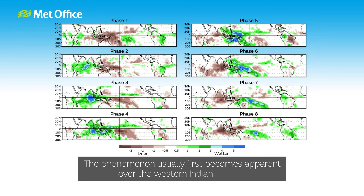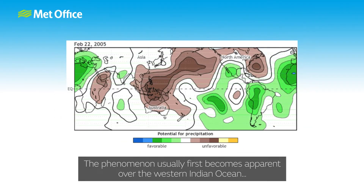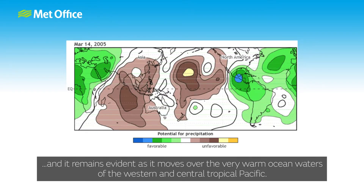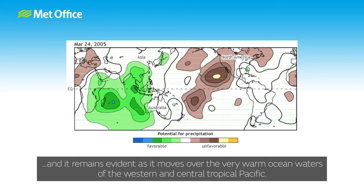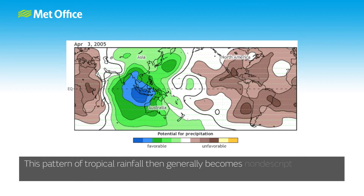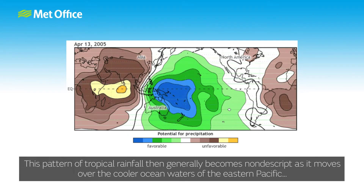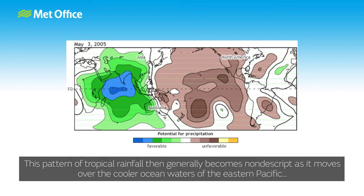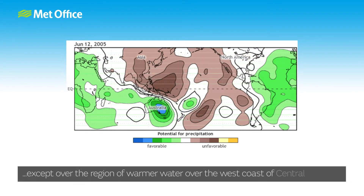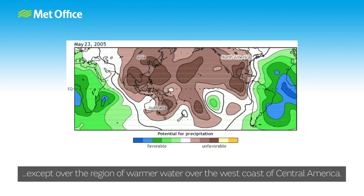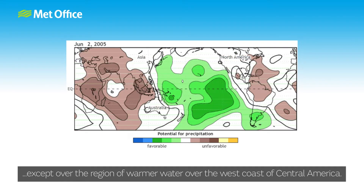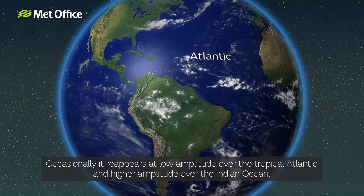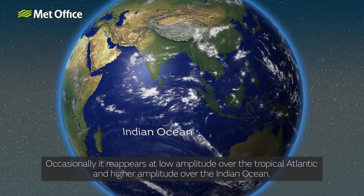The phenomenon usually first becomes apparent over the western Indian Ocean and remains evident as it moves over the very warm ocean waters of the western and central tropical Pacific. This pattern of tropical rainfall generally becomes nondescript as it moves over the cooler ocean waters of the eastern Pacific, except over the region of warmer water over the west coast of Central America. Occasionally it reappears at low amplitude over the tropical Atlantic and higher amplitude over the Indian Ocean.